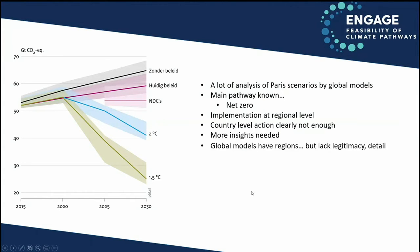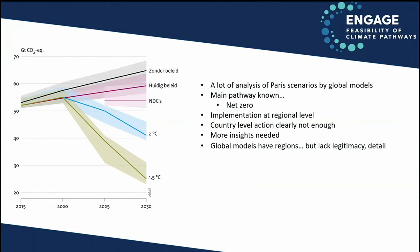We can do that analysis with global models because they have regions, but they lack legitimacy in the country itself. It's much more interesting to look at the Indian results using Indian models, and global models also lack detail. That's why in Engage, and also in previous projects like Commit, we are working together with global modeling teams and national teams to do joint analysis of similar goals. Countries informed by national teams get quite similar analysis results, so the Indian government receives results from the Indian modeling team that has worked together globally — the results are not influenced by methodological differences.